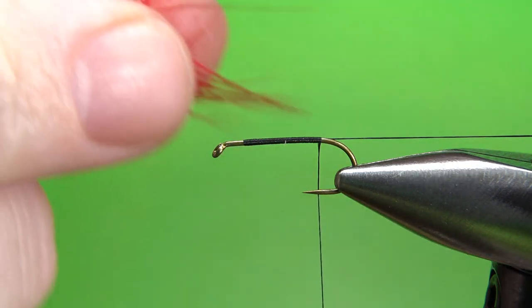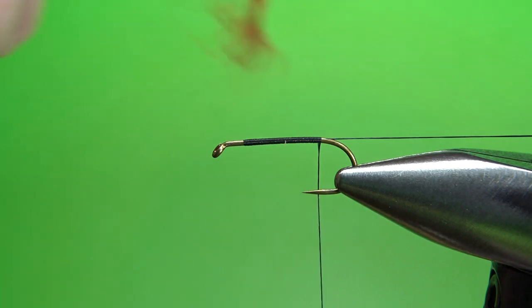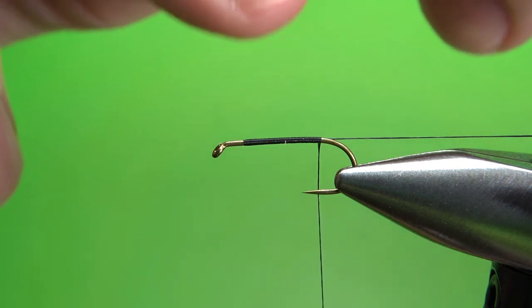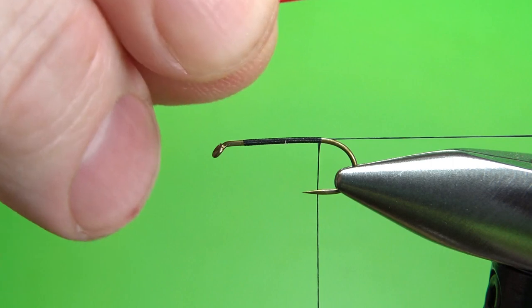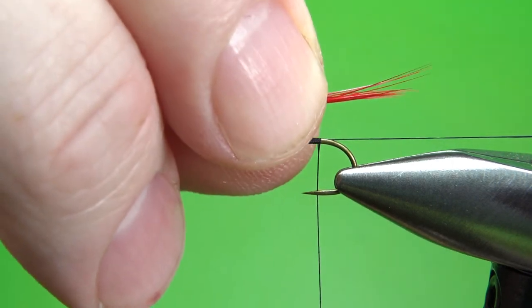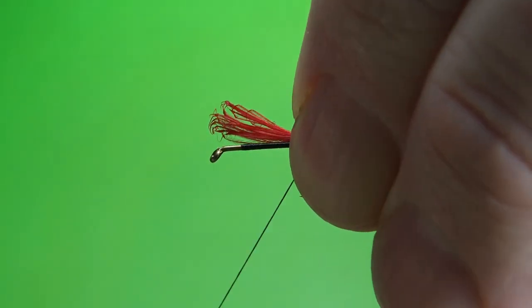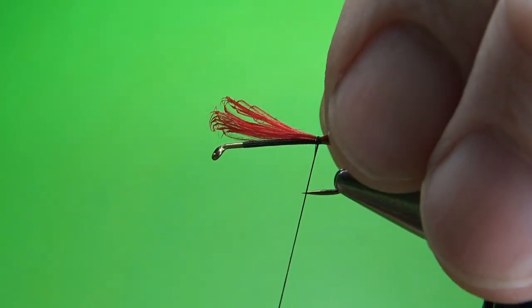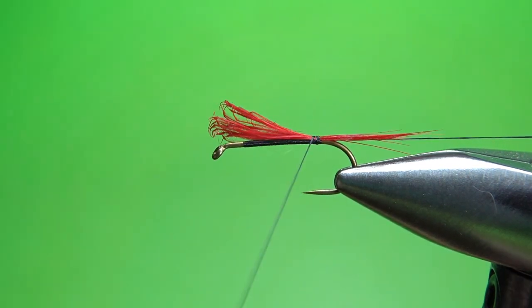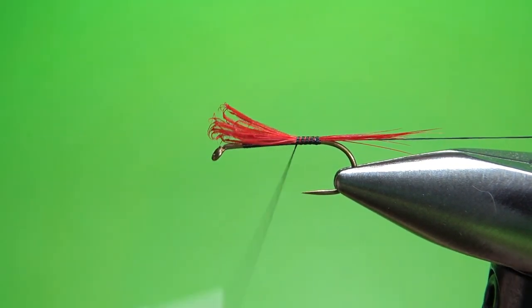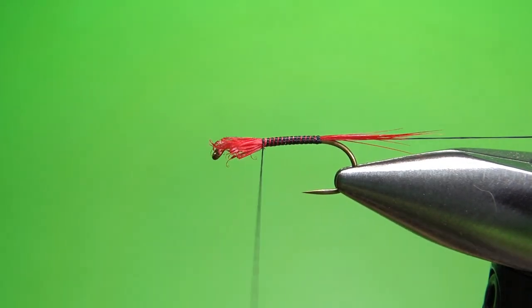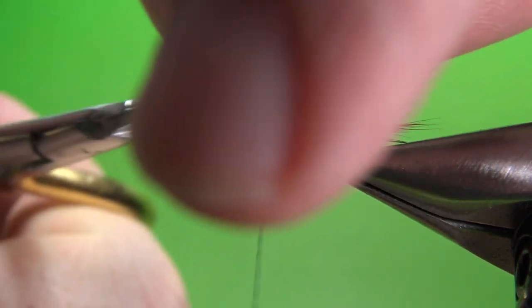Red hackle fibers. Just about eight or ten of these. I'm going to pull them out perpendicular to the stem of the feather to keep the tips in line. Maybe a hook gap. Not terribly long of a tail, but it's a dry fly, so it can be a little bit longer. I'll take a couple wraps and check that position. That's fine. I'll use some of this as part of my underbody. Now snip off these butt ends.